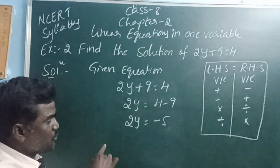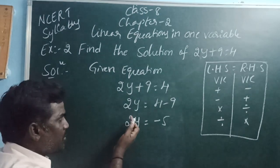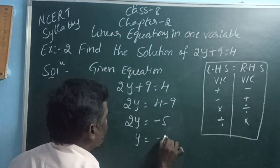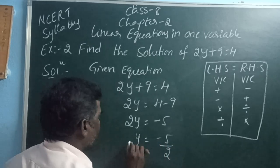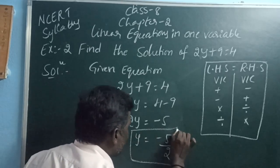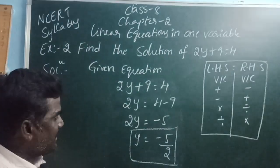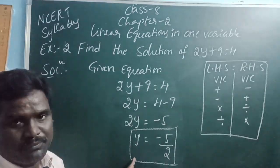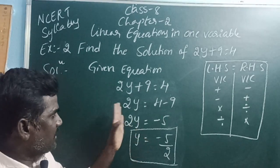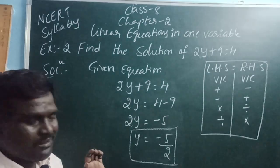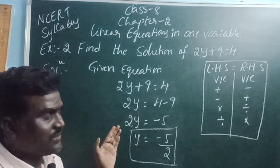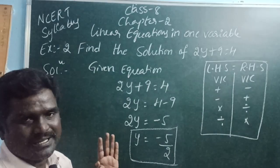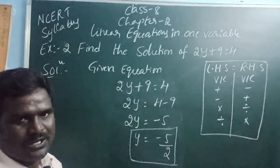Here, 2y means 2 into y. So the 2 is moving to the other side and becomes divide. Therefore y is equal to minus 5 by 2. So the value of the variable is minus 5 by 2. We want only the variable; with the variable, constants or digits are combined using binary operations — that is, plus, minus, multiply, or divide.